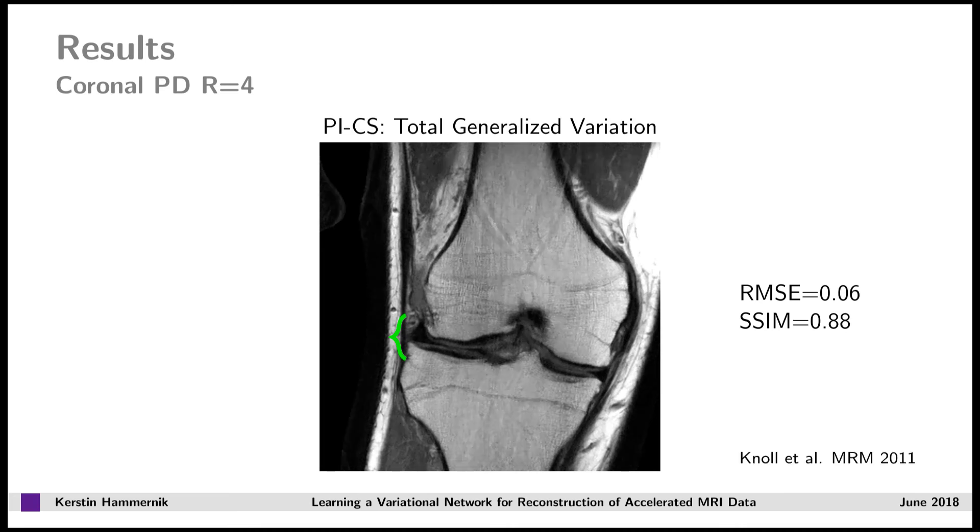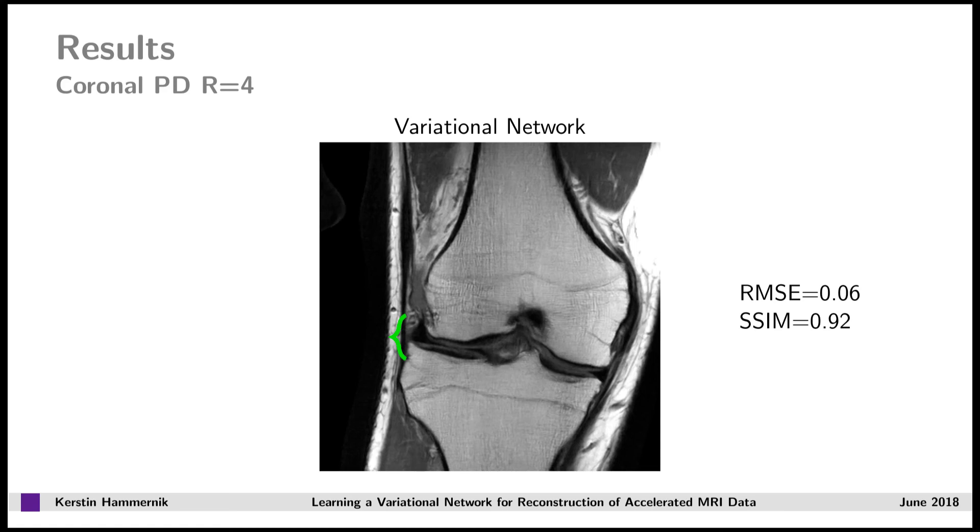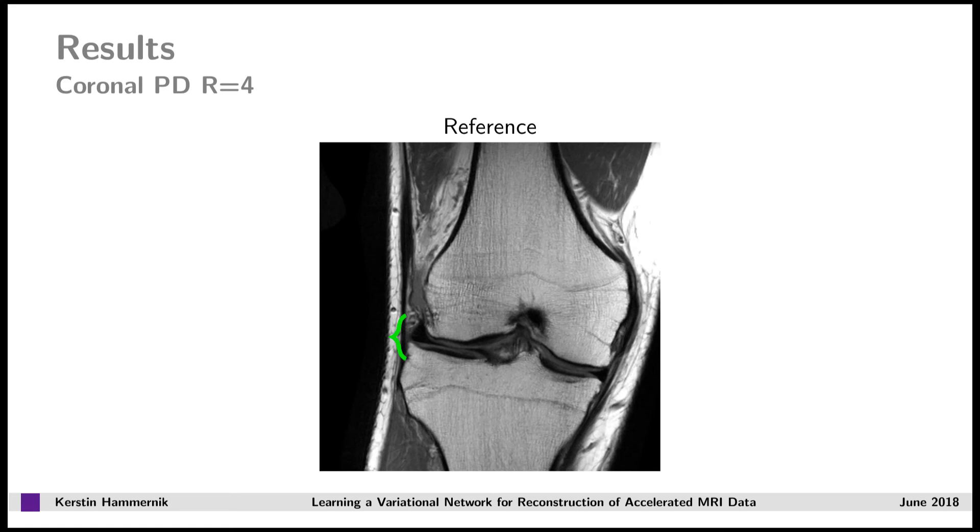If we use a total generalized variation approach, the artifacts are reduced. We also compare to dictionary learning, which shows very good results in this image. If we compare this result now to our variational network reconstruction, we observe both improved image quality in terms of sharpness and reduced undersampling artifacts, and improved quantitative values in terms of RMSE and structural similarity index. Here is also the comparison to the fully sampled reference.